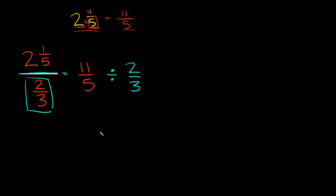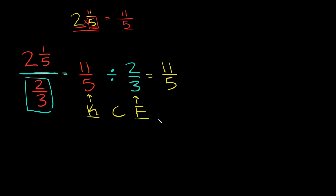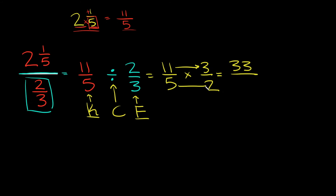Now that we have our division problem set up, it's time to bring on the KFC. K stands for keep — eleven over five stays as eleven over five. Then we flip the second fraction: two over three turns into three over two. And we change our sign from division to multiplication. Multiplying straight across: eleven times three is thirty-three, over five times two, which is ten. So two and one-fifth divided by two-thirds equals thirty-three over ten.